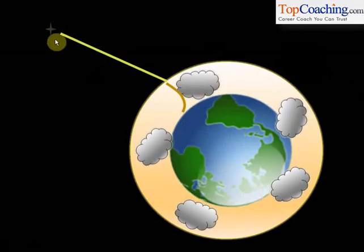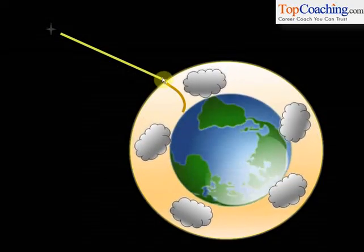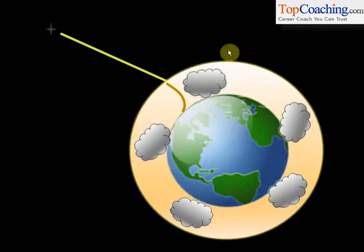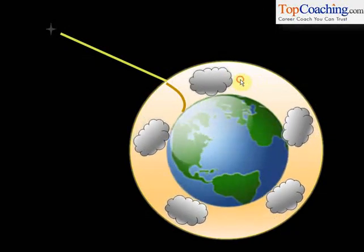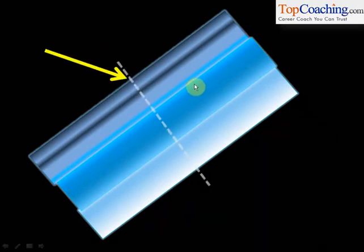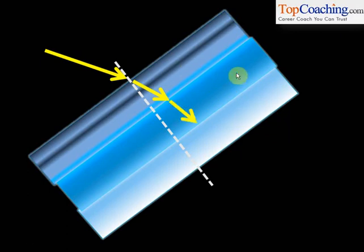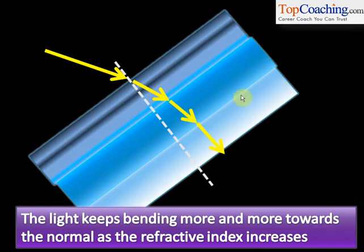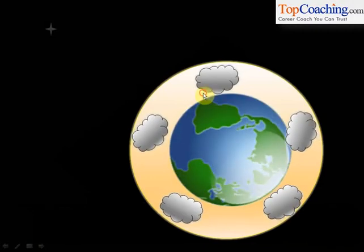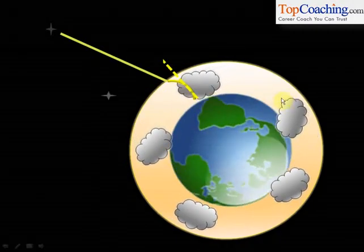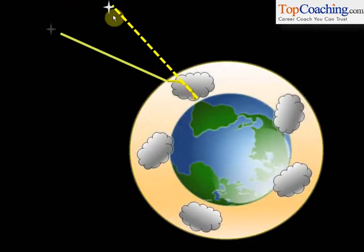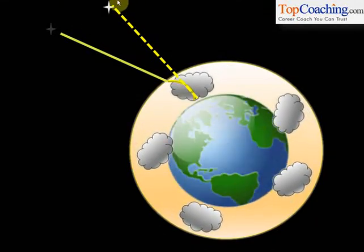Let me explain this in detail. The light from the star first travels in a straight line through space. When it reaches the atmosphere, it bends — not just once, but gradually and continuously as it travels through the atmosphere. The upper atmosphere has lesser refractive index and the lower atmosphere has greater refractive index. When light travels from a medium of lesser refractive index to greater refractive index, it bends towards the normal. So light keeps bending more and more towards the normal as it travels through the atmosphere. Finally, the light reaches Earth along a curved path, the brain extends that ray backwards, and we see the star at a different position from its actual one.